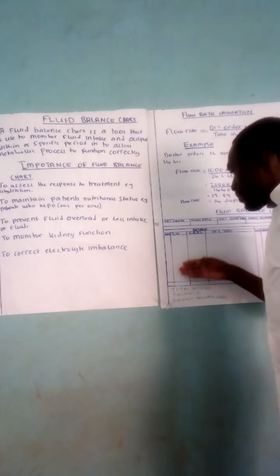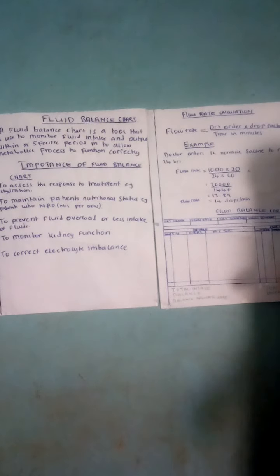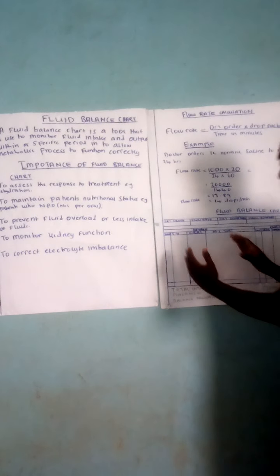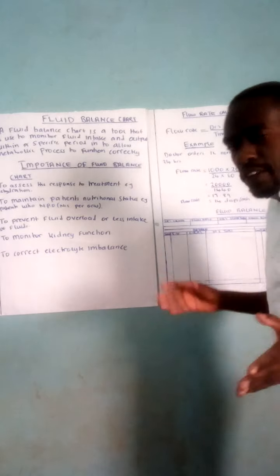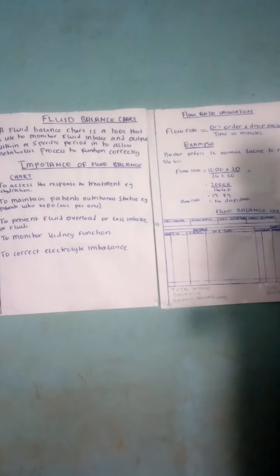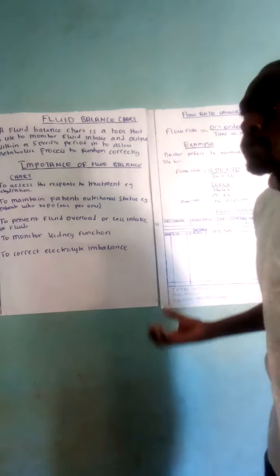When it is time — maybe at the 24-hour mark — you need to add up the fluids given: add up the intravenous fluids and write the total, add up the oral fluids and write the total, add up the nasogastric feeds and write the total. On the output side, add up the urine and write the total, then add up all outputs including vomit to get the total output.